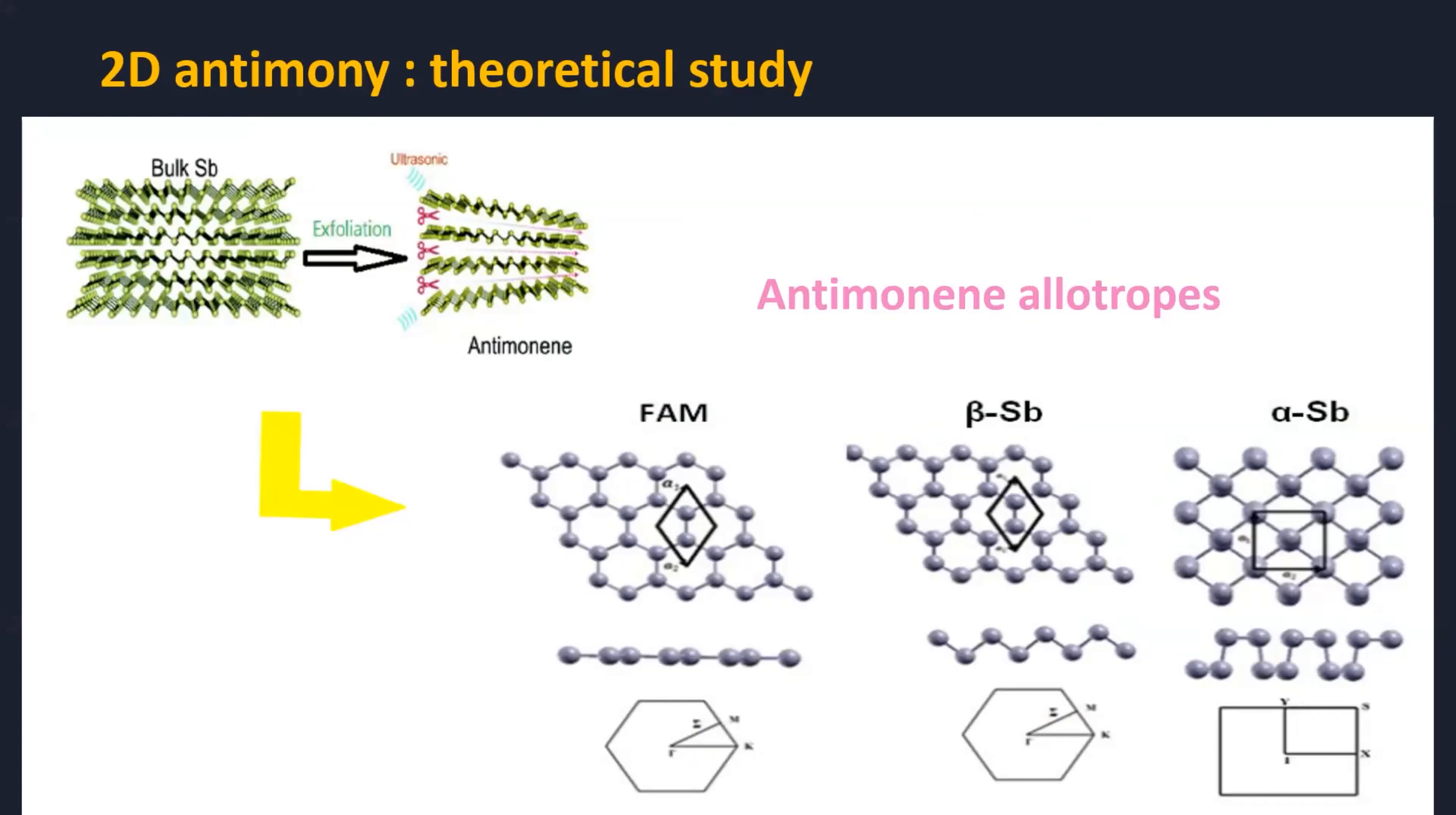The antimony can be exfoliated to give different sheets of antimony. These materials can present several allotropes, flat antimony or buckled antimony.